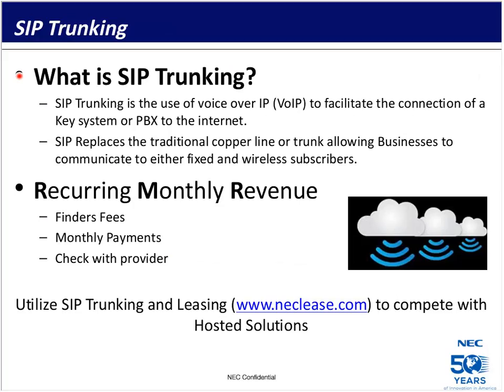What is SIP Trunking? SIP Trunking is nothing more than a different way of bringing dial tone into the facility. However, instead of an analog signal like a POTS line, or a digital signal like a PRI circuit, it uses IP technology — voice over IP — to bring the signal into the demarcation point. SIP Trunks can replace a traditional copper line, allowing businesses to communicate with either fixed or wireless subscribers, and give users a tremendous amount of flexibility with their lines.